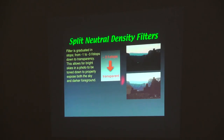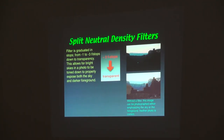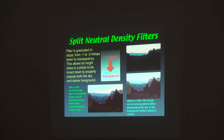Or you can put this filter in front of the camera so that the dark part is up here and the clear part is down here, and all of a sudden the difference in exposure between the two becomes less. And all of a sudden — voilà — you end up with exactly what you want. But you had to do something to treat it. That's what a graduated neutral density filter does.